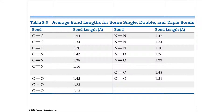Another piece of information you can get from average bond energies is bond lengths. The more energy it takes to break a bond suggests how close together the atoms are. A single bond has an average bond length of 1.54 angstroms, a double bond is closer at 1.34, and a triple bond is even closer at 1.20. The more electrons shared between two atoms, the more energetic the bond and the shorter the bond length — so it's not just stronger, but also closer.